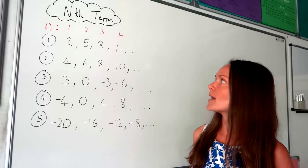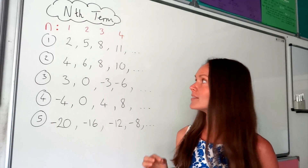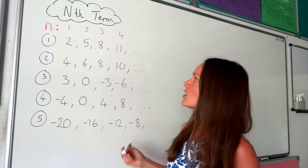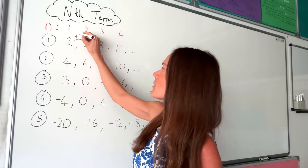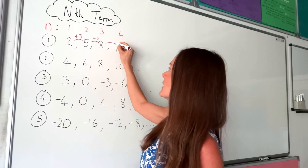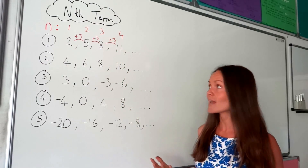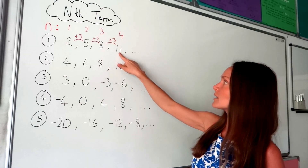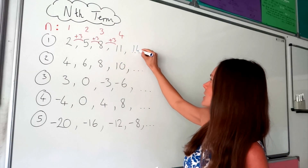In order to work out the nth term, the first thing you need to do is look at the difference between the numbers in that sequence. In the first one, each time we're adding 3 to find the next term. So if we wanted to find the next number in this sequence, we would just add 3 to the number 11, which would give us 14.